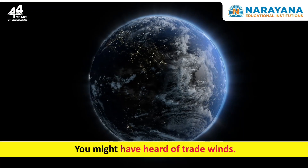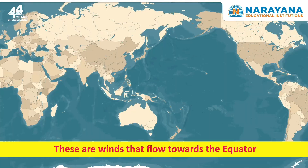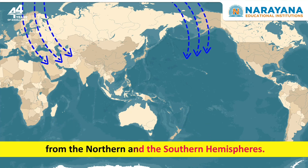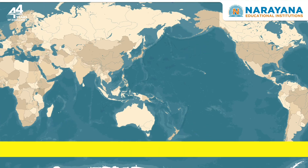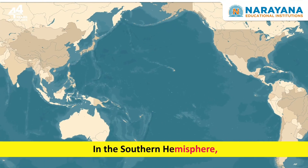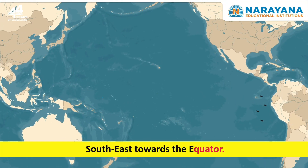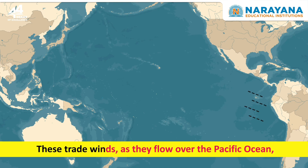You might have heard of trade winds. These are winds that flow towards the equator from the northern and the southern hemispheres. In the southern hemisphere, the trade winds travel from the southeast towards the equator.